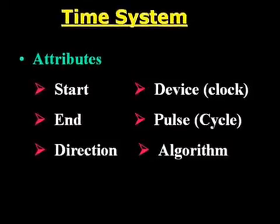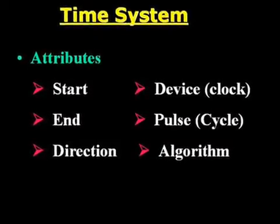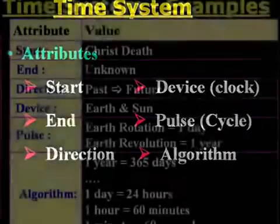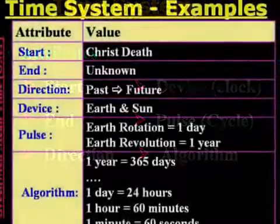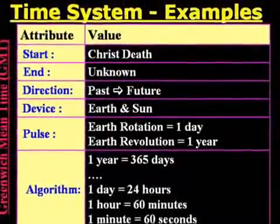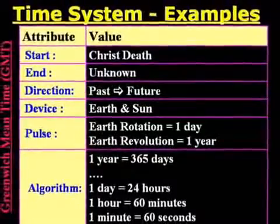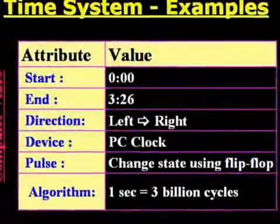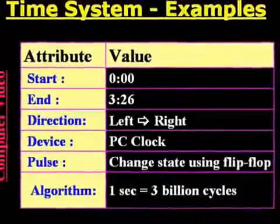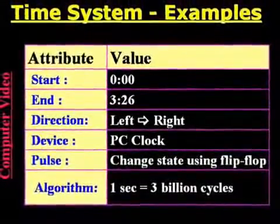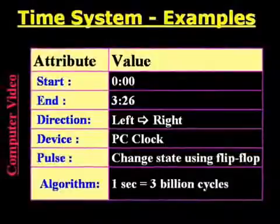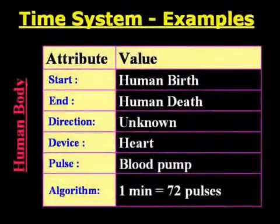A time system inherits the following attributes. For example: the Greenwich time system, the computer video system, and the human body system.